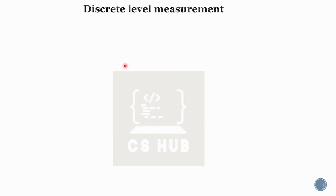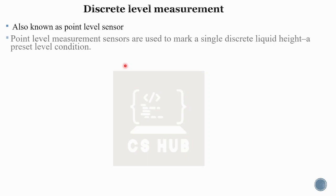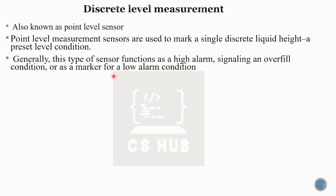Discrete level measurement is point-level sensing — one particular point is measured. These sensors are used to mark a single discrete liquid height, a preset level condition. Generally, this type of sensor functions as a high alarm, signaling an overfill condition, or as a marker for a low alarm condition. That particular point is the point level measurement.